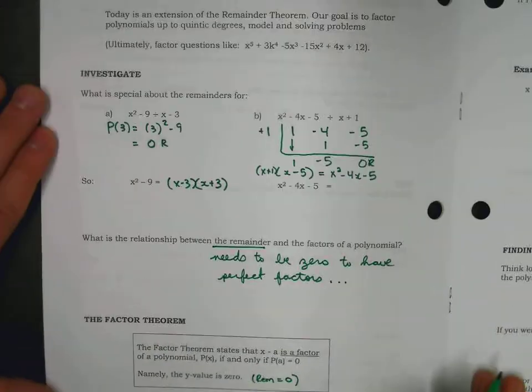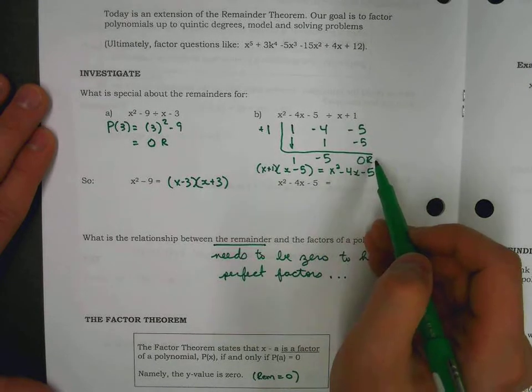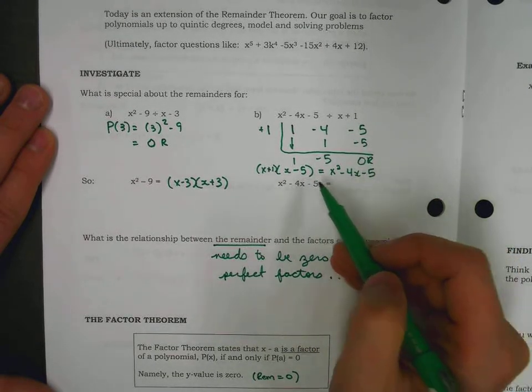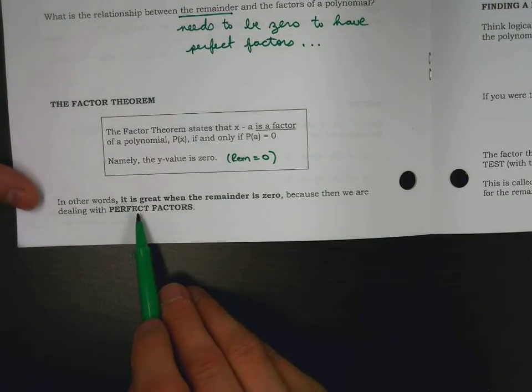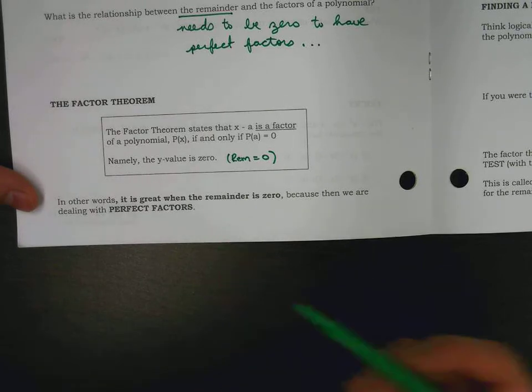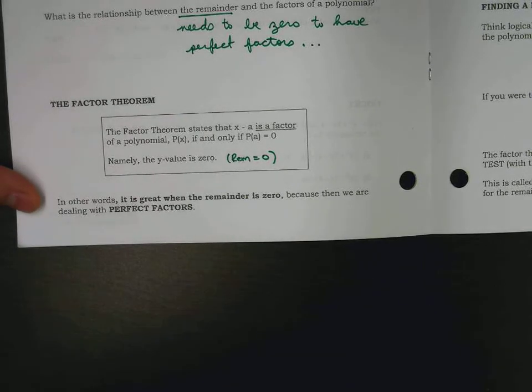So if you divide by x plus one and zero comes out, it means you have factors. That's basically it. It's factorable. In other words, it is great when the remainder is zero because then we're dealing with perfect factors.